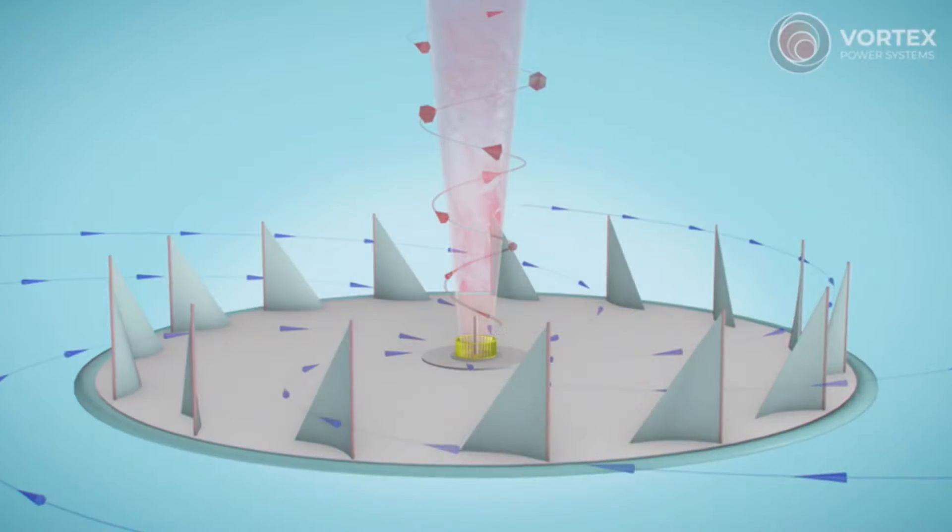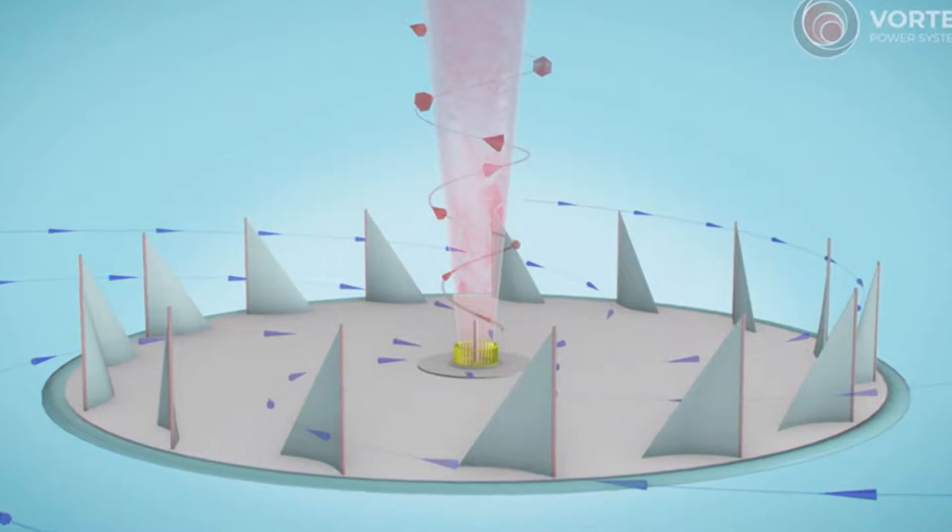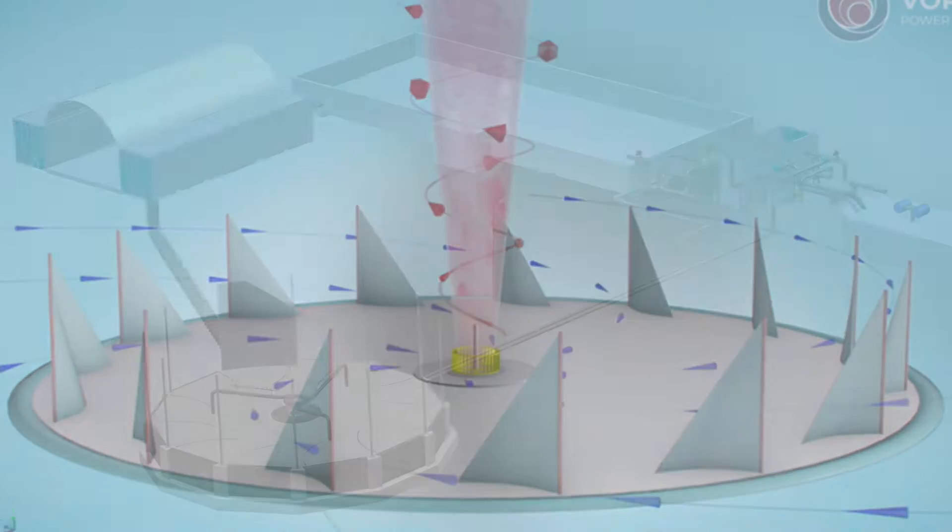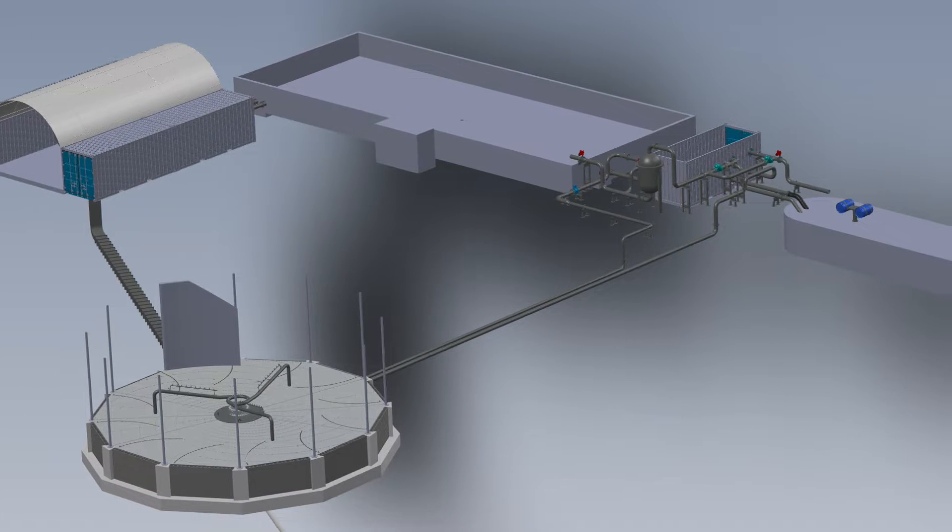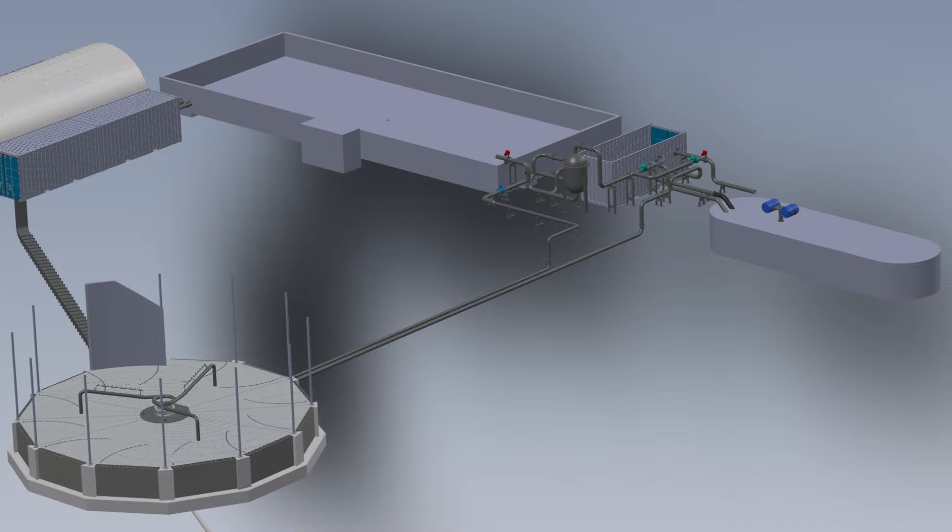The idea is we use the wasted heat that's from industrial processes such as steel mills, paper mills, geothermal power plants and use it to create a controllable water spell and use the fast wind speeds from those water spells to turn a turbine and generate electricity.